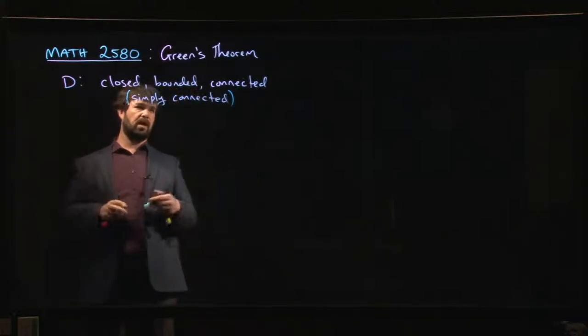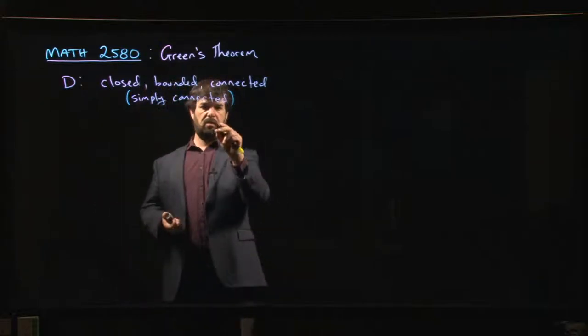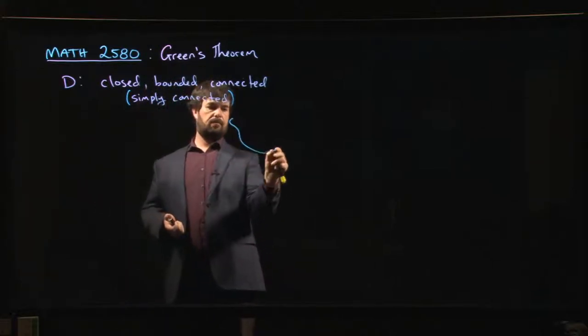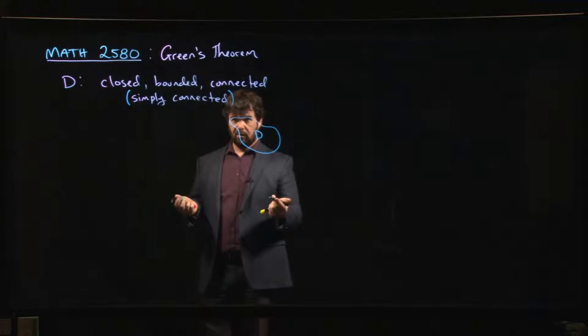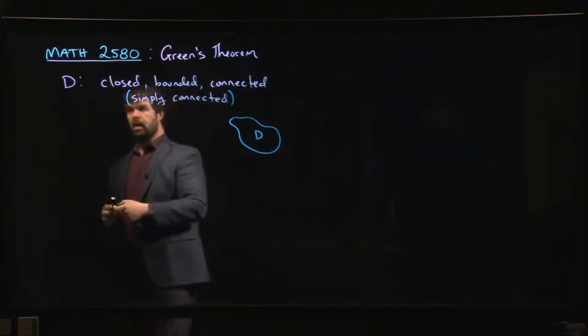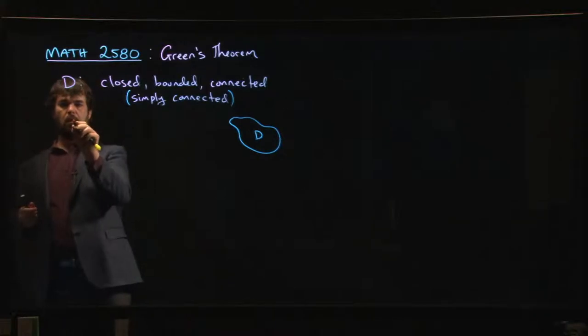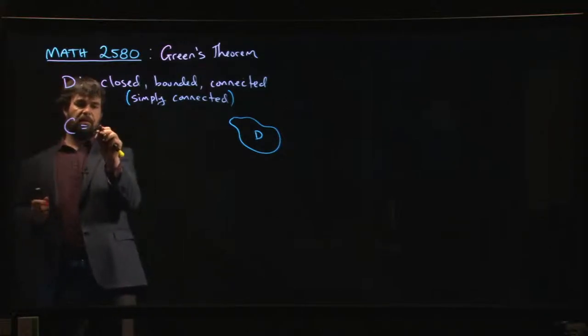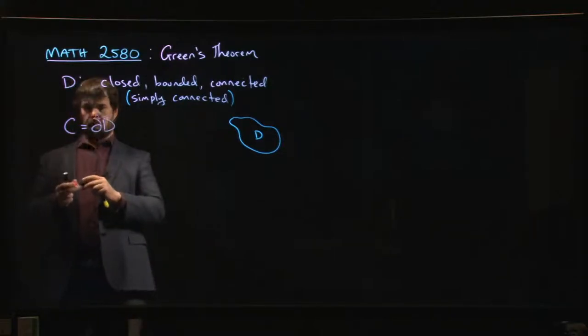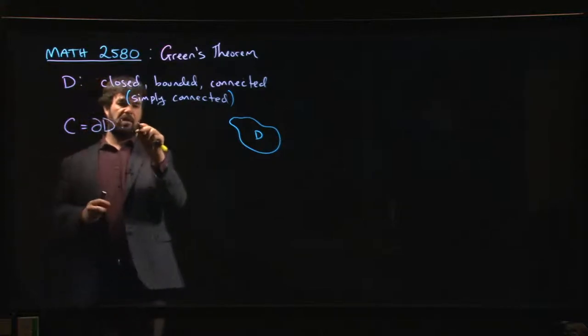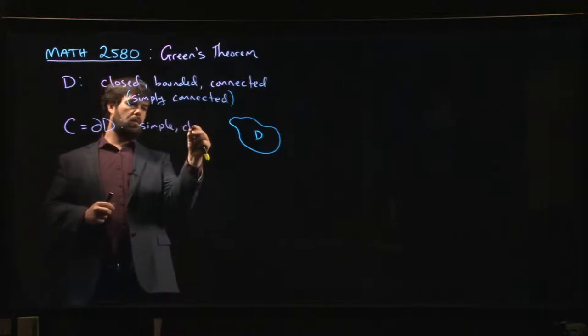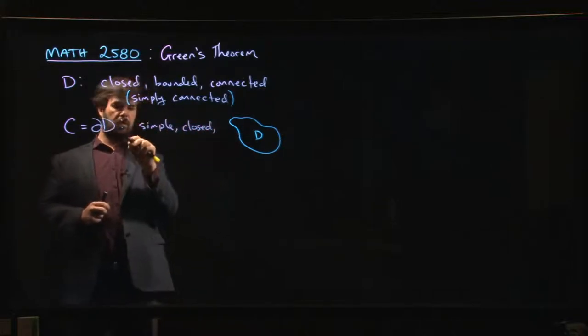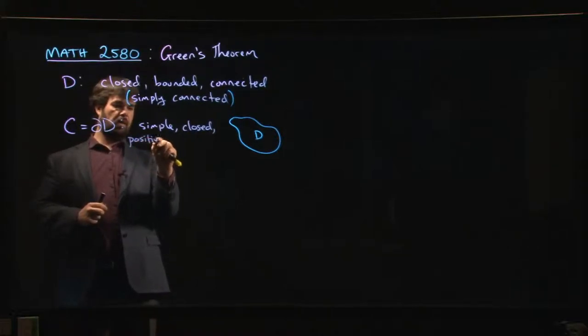D is this closed, connected, simply connected region that we can integrate over. D is something like this, some region where it makes sense to consider a double integral. Then we have C, using the notation from the previous video, which is the boundary of D.